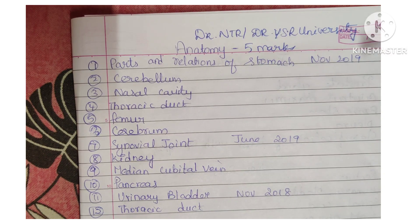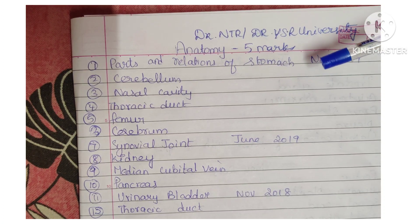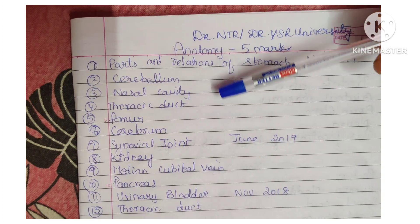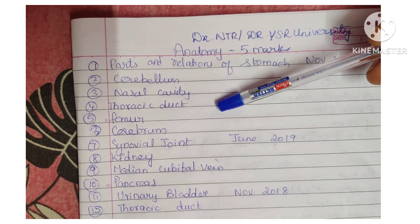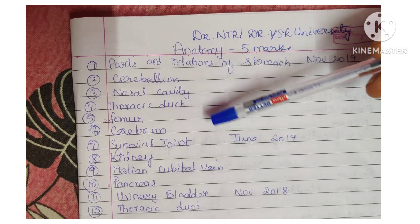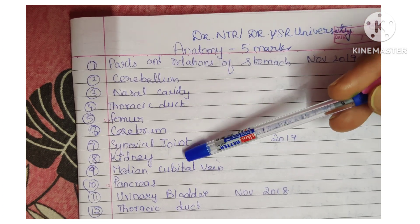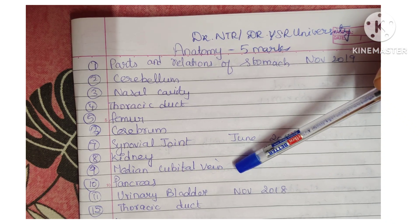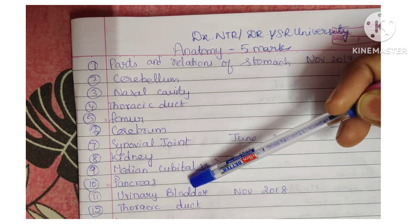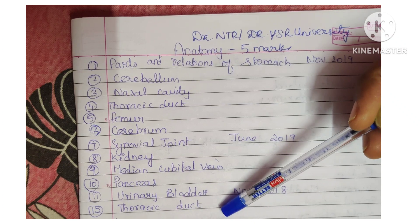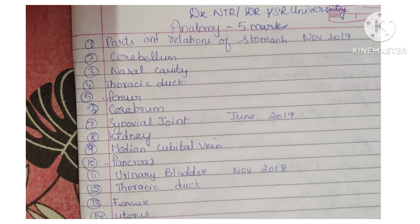Let's move on to the questions discussed in previous years under the section of 5 marks or short notes. Topics include: parts and relations of stomach, cerebellum, nasal cavity, thoracic duct, femur, cerebrum, synovial joint, kidney, median cubital vein, pancreas, urinary bladder, thoracic duct, and femur.